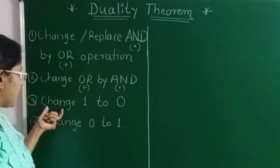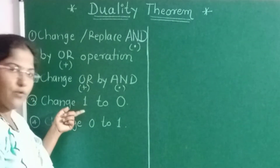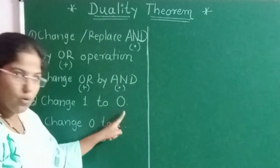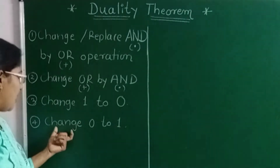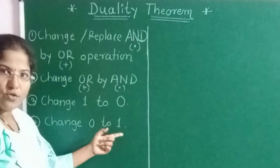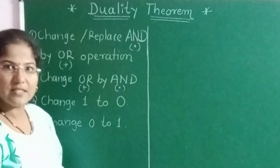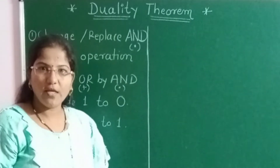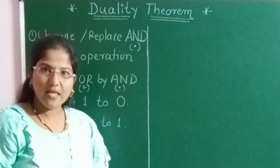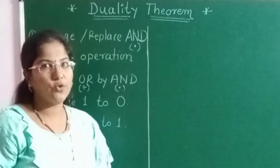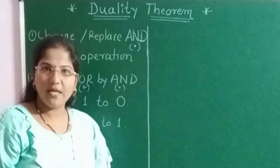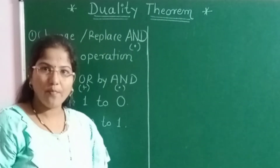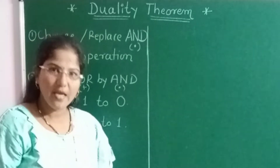The duality theorem also states that if we have a 1 in the given Boolean expression, we have to change 1 to 0, and vice versa — we have to change 0 to 1. So now we will see some examples of how to get the dual of a given Boolean expression.